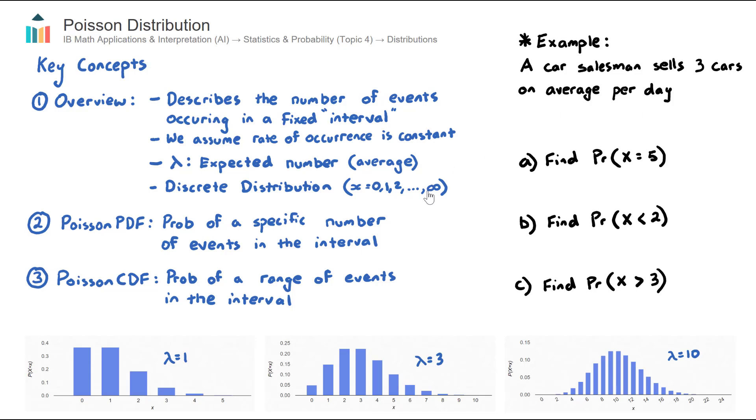It's a discrete distribution. The car salesman can't sell decimals of cars, can't sell 1.5, can't sell negative cars. So all the possible outcomes are from zero.